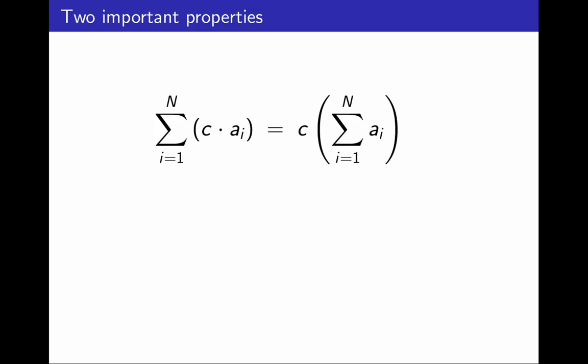And second, what if I have a sum of terms of the form a sub i plus b sub i? I can add all the a terms first, and then add all the b terms. This is due to the commutative and associative properties of addition. I can regroup and reorder how I add terms. That's all.